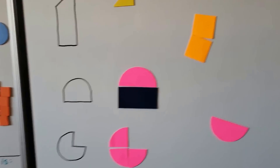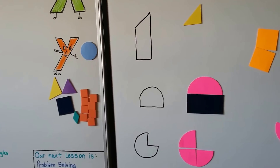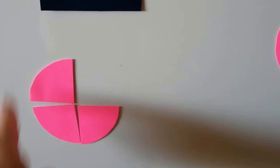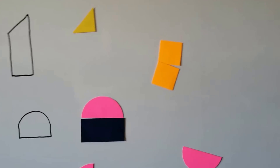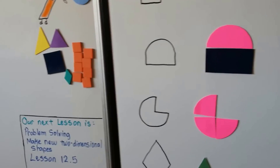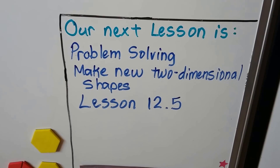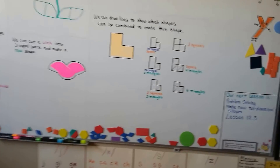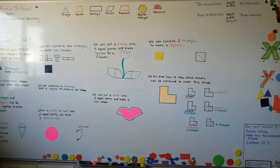You can get shapes like these online in plastic, wood, or even magnetic. But it's more fun to make your own shapes out of construction paper or poster board — just trace something round and cut it out, then cut the pieces up. You can trace something square and cut it out too, and see what different new shapes you can make. Our next video is Problem Solving: Make New Two-Dimensional Shapes, Lesson 12.5. We're also coming up on learning about fractions, so this is getting you ready for that. Hope to see you next time — have a great day!